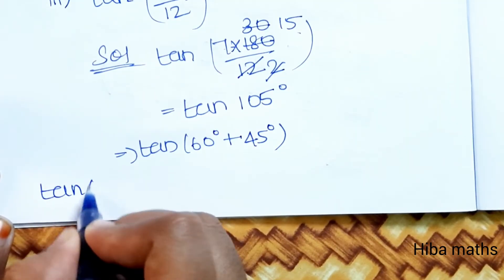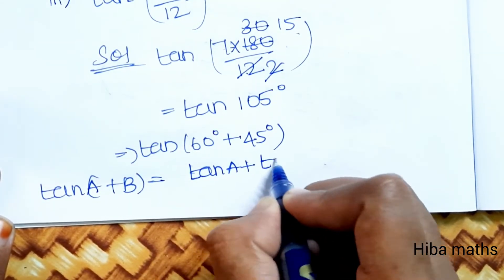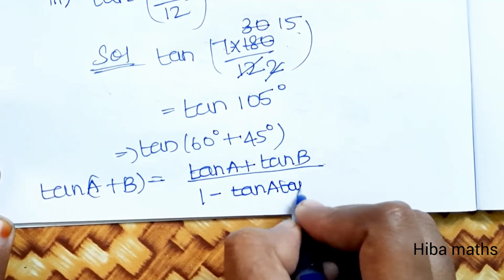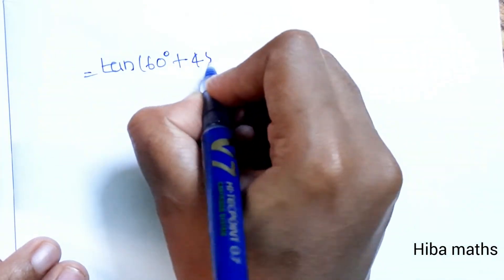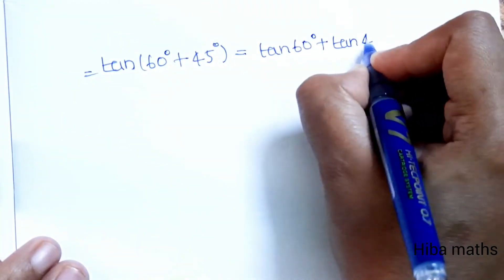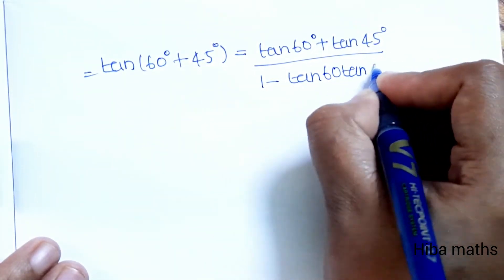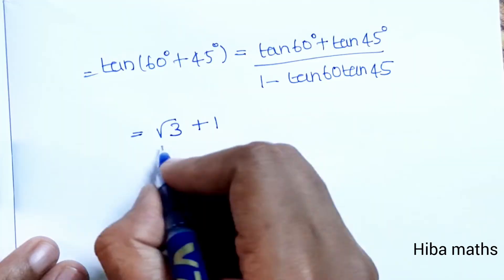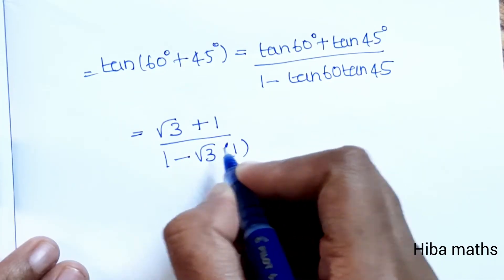The formula for tan(a + b) = (tan a + tan b) / (1 − tan a · tan b). Substituting, tan(60 + 45) = (tan 60 + tan 45) / (1 − tan 60 · tan 45) = (√3 + 1) / (1 − √3 · 1) = (√3 + 1) / (1 − √3).